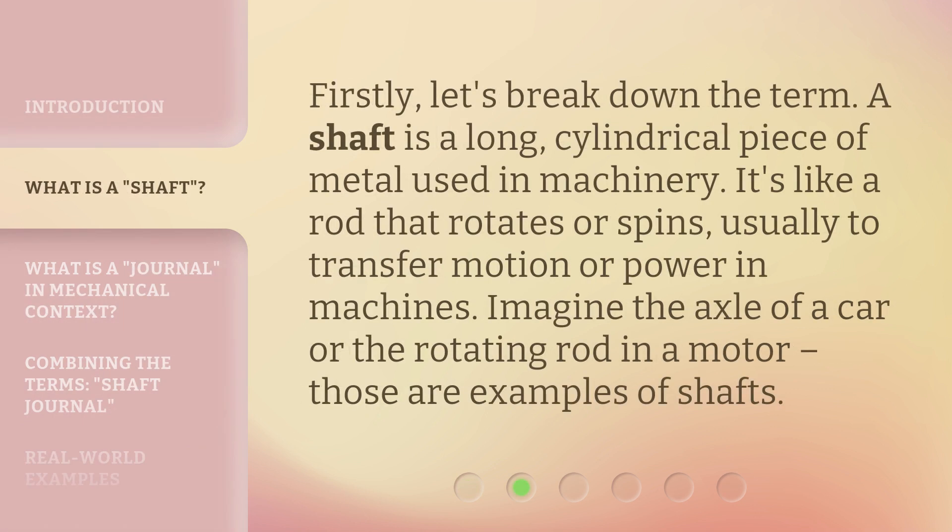Firstly, let's break down the term. A shaft is a long, cylindrical piece of metal used in machinery. It's like a rod that rotates or spins, usually to transfer motion or power in machines. Imagine the axle of a car or the rotating rod in a motor — those are examples of shafts.